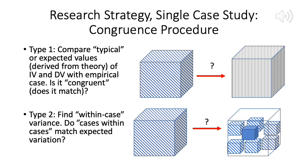Type 2 is when we find within-case variance. We've developed expectations of a relationship between two variables at the national level, and now we want to know: does it exist at the subnational level as well? Or we might find a relationship between variables at one point in time for a particular country, but is it there at other points in time too? For instance, we might hypothesize that the influence of the military in Pakistani politics increases whenever there is an economic crisis — and then test whether that holds true across multiple points in Pakistan's history.